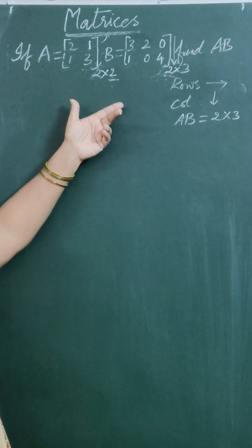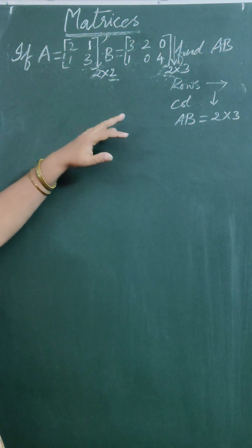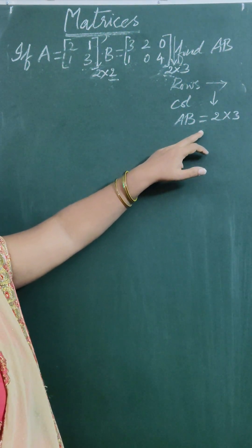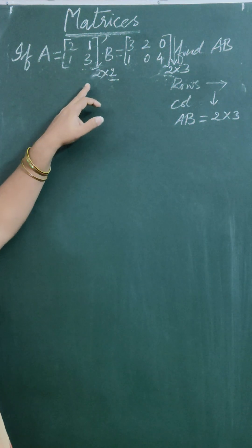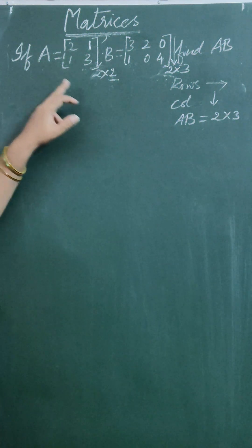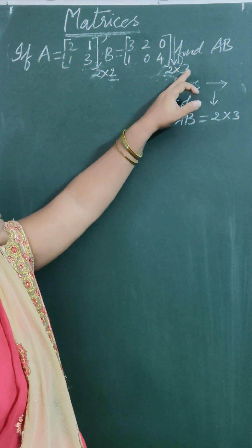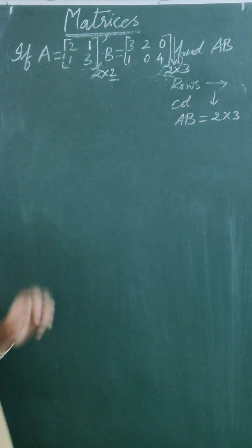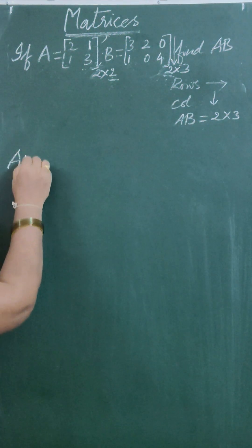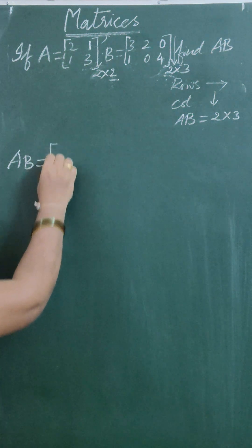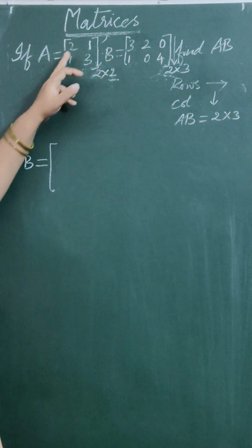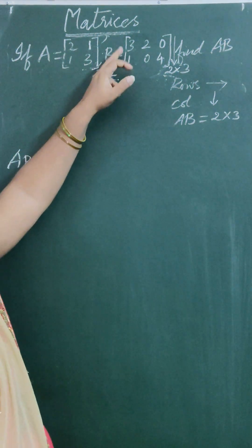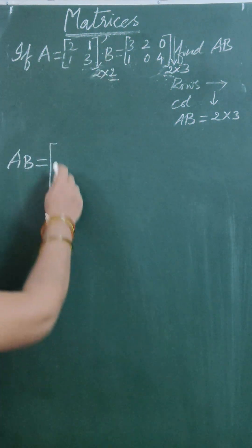So matrix multiplication is possible. The order of the resultant matrix A times B is equal to number of rows in matrix A by number of columns in matrix B, that is 2 by 3. A times B equals multiply each row in matrix A by each column in matrix B.